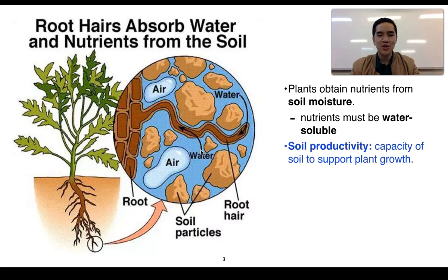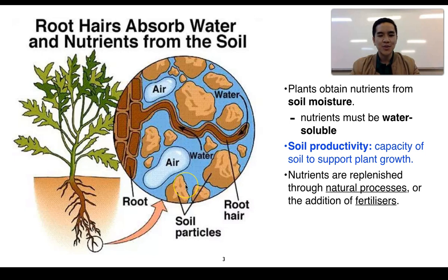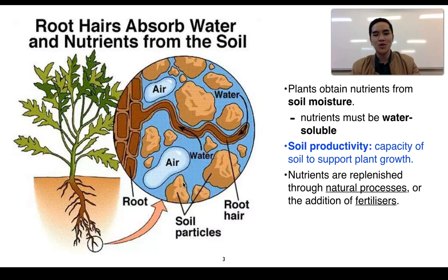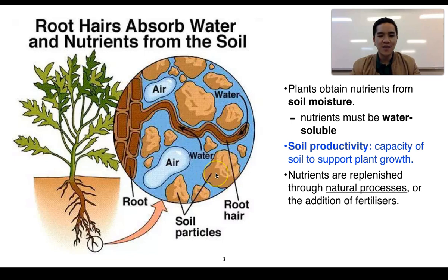Soil productivity is a term we use to describe the capacity of soil to support plant growth. Soils are important because they help control and regulate the ability for plants to take in nutrients from the soil water, since there's an exchange process that takes place between the soil particles and the soil water. This is a natural process, however we can also look at non-natural processes like the addition of fertilizers that can further replenish the soil of nutrients.